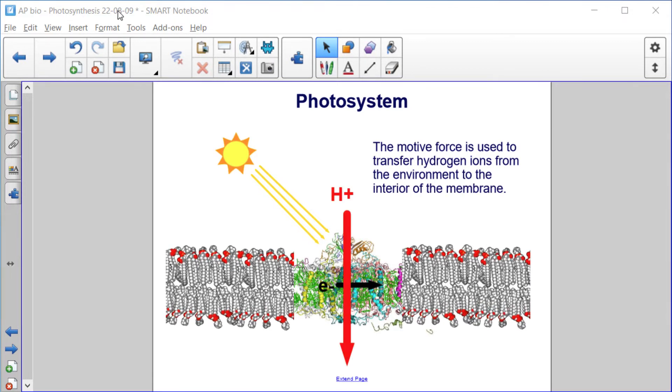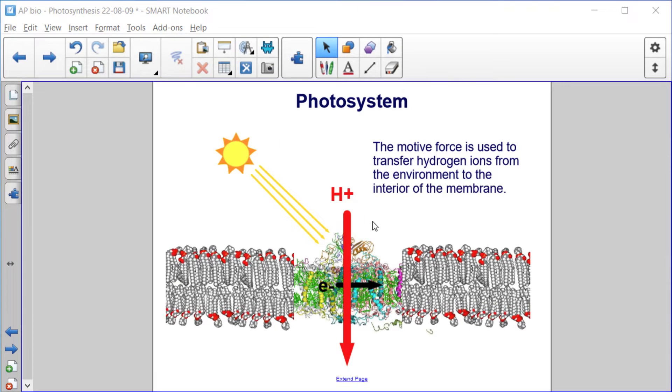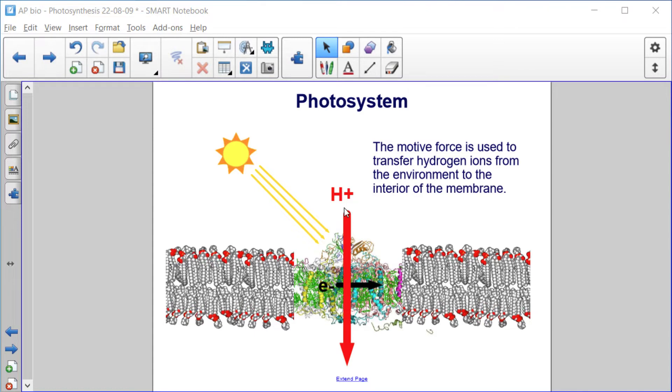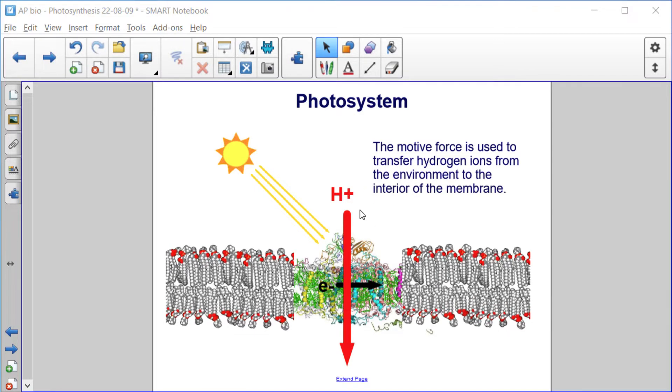The motive force is used to transfer hydrogen ions from the environment, out here, to the interior of the membrane. Remember that all prokaryotic cells maintain a proton gradient across their plasma membrane.